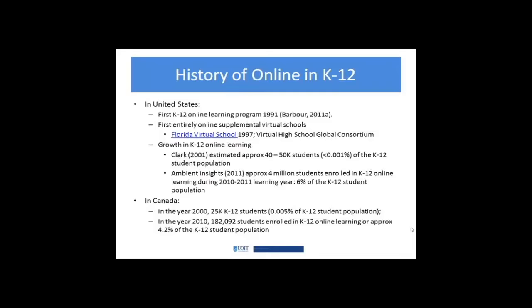In Michael Barber's article, he does a nice job of explaining the U.S. terminology around what they consider to be online learning, virtual schools, hybrid schools — all kinds of different terms that we would use in Canada, but ones that are extremely valuable when you start looking at what literature is coming out in online learning. In the United States in 2001, there was an estimate that approximately 40,000 to 50,000 students, or 0.001% of the K-12 student population, were in some form of K-12 online learning course.